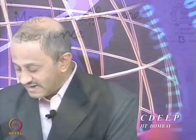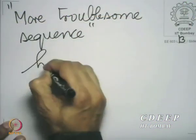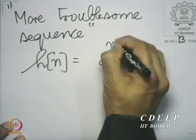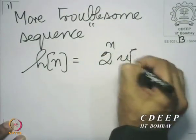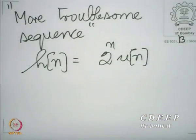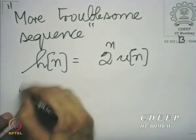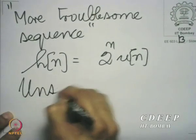Let an LSI system have the following impulse response: h(n) = 2^n * u(n). This LSI system would, at the slightest provocation, exhibit an unbounded output. It is very clear that this impulse response is not absolutely summable, so it is an unstable system.